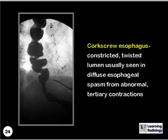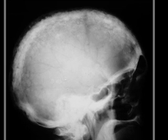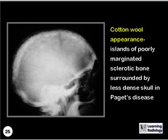What is the name of this pattern? This is the cotton wool appearance, islands of poorly marginated sclerotic bone surrounded by less-dense skull in Paget's disease.